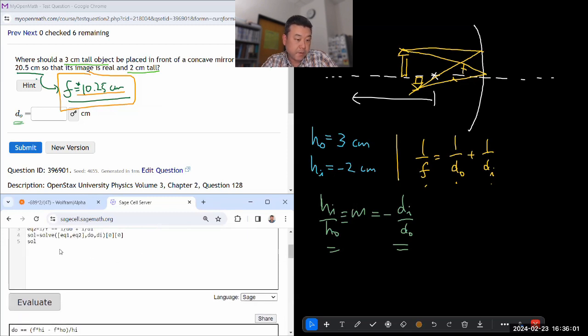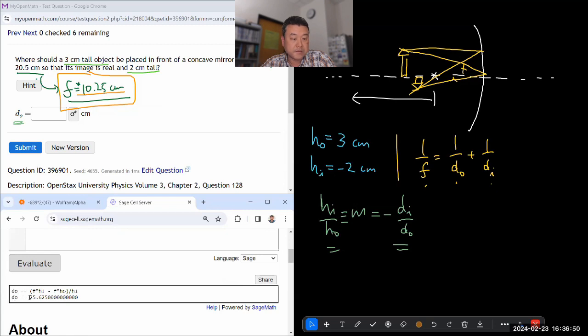So this is the way to set up SageMath to have it do this algebra for you. It's really good at solving systems of equations. Now I need to plug in the numbers. I use a substitution syntax. Any algebraic expression in SageMath has the substitute method. So I specify F equals 10.25 centimeters, HI equals minus two centimeters because it's upside down, HO equals three centimeters. That's the object distance: 25.6 centimeters.